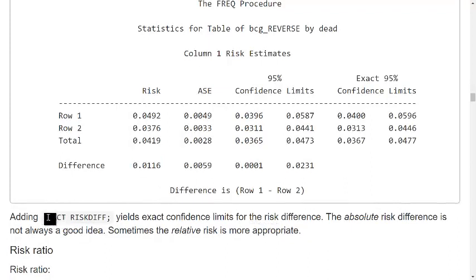I can add an option saying exact risk diff that gives me exact confidence limits for the risk difference. We don't discuss this in this call, but you can see that something is missing over here and we can add it using the statement exact risk diff.